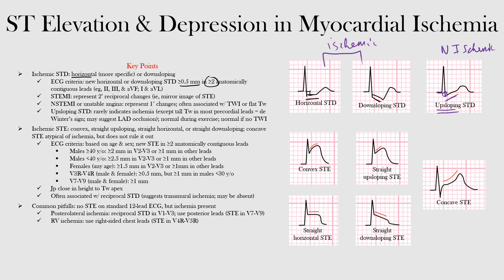Acute transmural ischemia often shows convex, straight upsloping, straight horizontal, or straight downsloping ST elevation. The convex ST elevation has a sad-face shape from the J point. The straight upsloping goes directly upward. The straight horizontal is flat, and the straight downsloping descends from the J point. All four of these types are signs of ischemia.